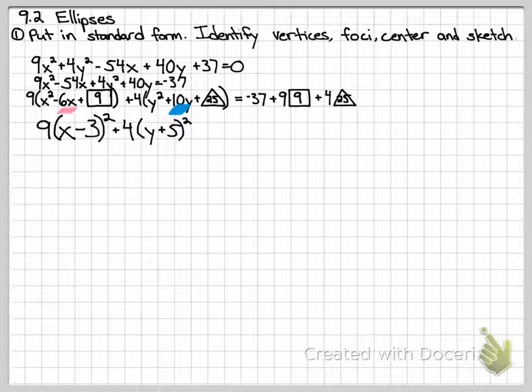So finishing this equation, it's going to equal negative 37 plus 9 times 9 is 81, plus 4 times 25 is 100, so it's going to equal 144. Now remember, standard form of an ellipse has to equal 1, and this equals 144 right now.